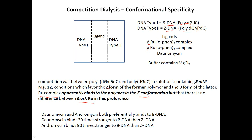There is no difference between lambda and delta ruthenium complexes in this case — both preferentially bind to Z-form DNA rather than B-form DNA. Both delta and lambda bind to Z-form DNA as determined by competition analysis. For daunomycin and adriamycin, both prefer B-DNA. Daunomycin binds 30 times more strongly to B-DNA than Z-DNA, while adriamycin binds 90 times more strongly to B-DNA than Z-DNA. This is how competition dialysis is used to analyze base specificity, sequence specificity, and conformational specificity.